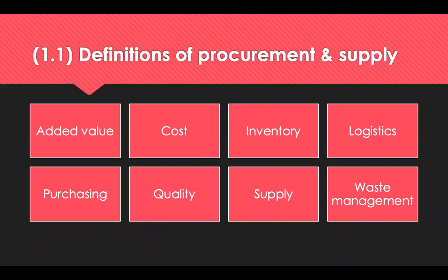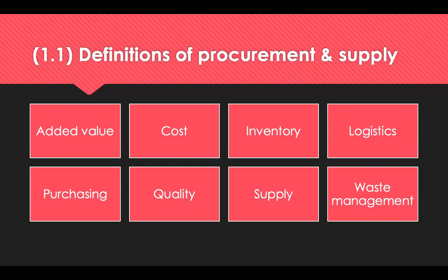Added value is the addition to a feature or capability for which the buyer is prepared to pay extra. The cost is the amount that has to be paid or spent to buy or obtain something. Inventory can consist of raw materials, work in progress, as well as finished goods. Logistics is the commercial activity of transporting goods to customers, and purchasing is the action of acquiring goods for the buying organisation.